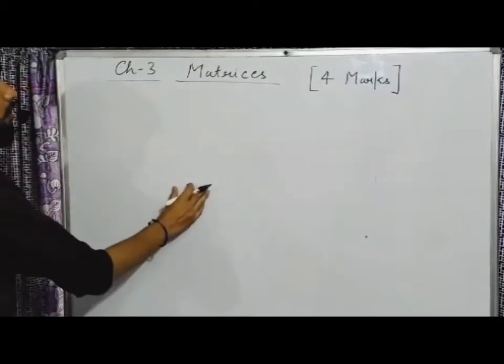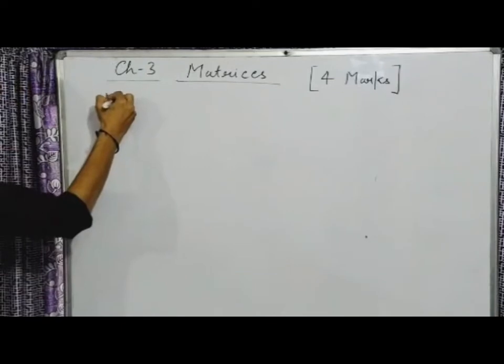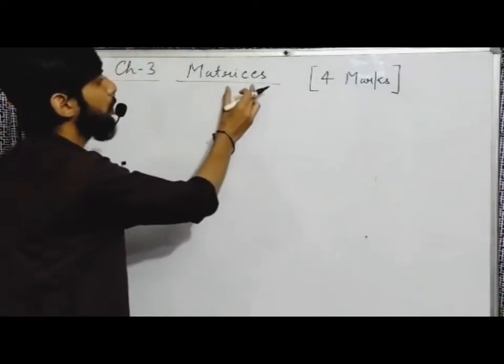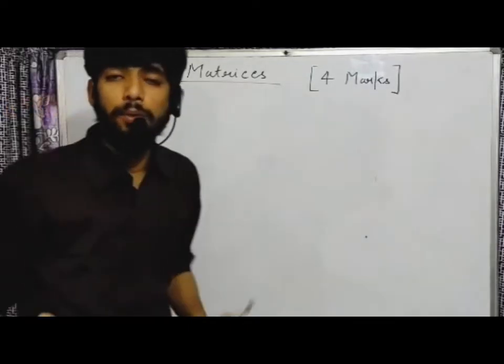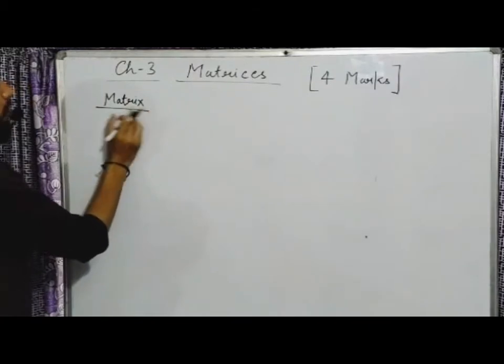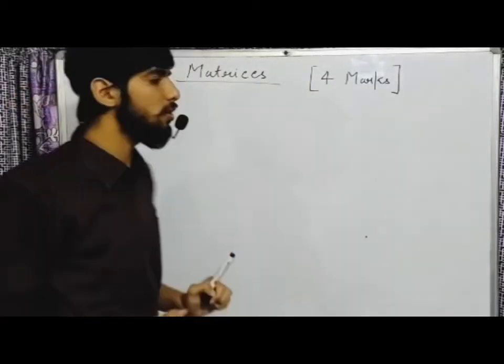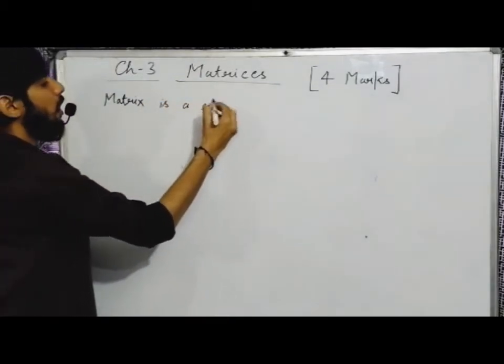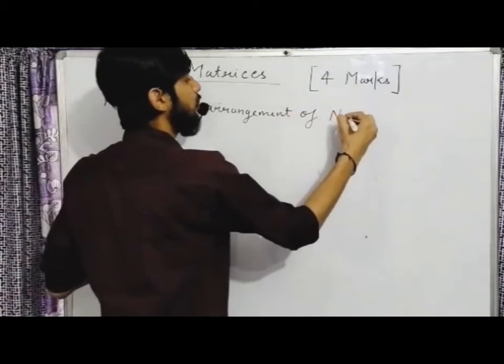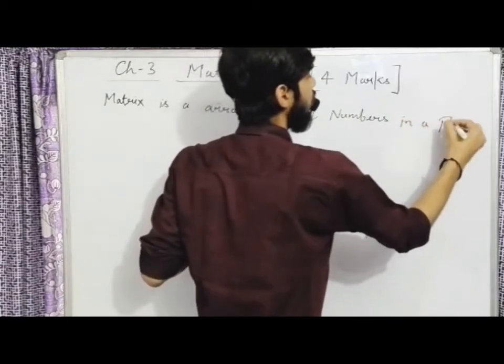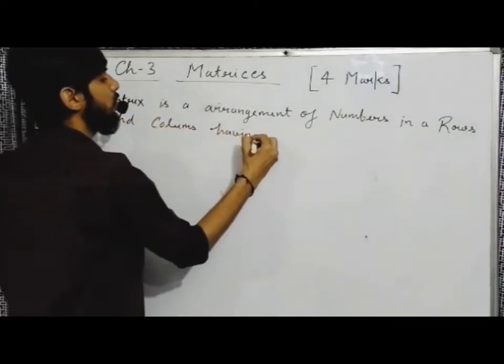Now, Matrices. Firstly, I tell you the definition of matrices. So what is the definition of matrices? Matrix - matrices is the plural form, matrix is the singular form. Matrix is the arrangement of numbers in rows and columns having order m cross n.